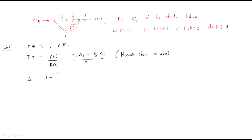Δ = 1 - (sum of individual loop gains). Looking at the signal flow graph, there is one loop equal to (1/s)×3 = 3/s, and another loop equal to k×(1/s)×1 = k/s. Therefore, Δ = 1 - (3/s + k/s) = 1 - (3+k)/s.